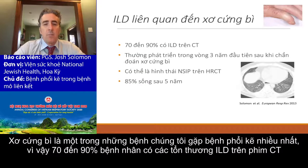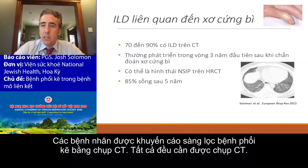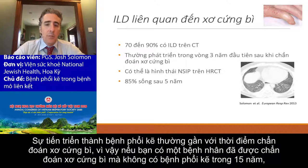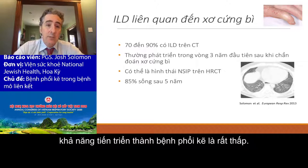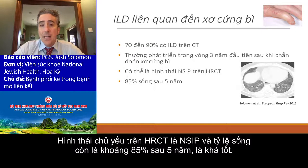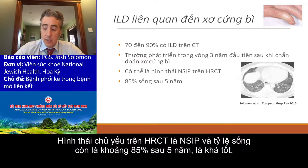Scleroderma is the one where we see the most ILD. 79% of patients will have ILD on a CT. It is recommended that we screen these patients — everybody with scleroderma should get a CT scan at some point. It usually develops close to the time of diagnosis of scleroderma. If someone has had scleroderma for 15 years and doesn't have ILD, their chance of developing it is quite low. They predominantly have an NSIP pattern on HRCT, and their survival is about 85% at five years, which is pretty good.